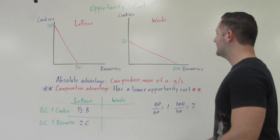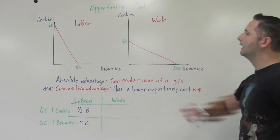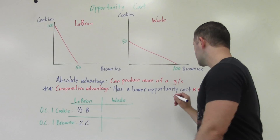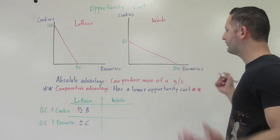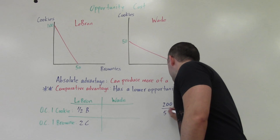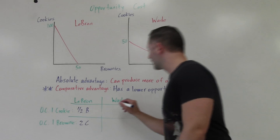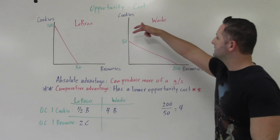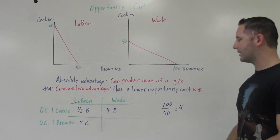Now we do the same for Wade — our numbers are a little different. Wade's opportunity cost for making one additional cookie: since he can make 50 cookies, we divide by 50, giving us 1. Then for brownies: 200 divided by 50 equals 4. So Wade is giving up 4 brownies to make one cookie. We can verify this makes sense — he can make a lot more brownies than cookies, so the opportunity cost should be greater than one.